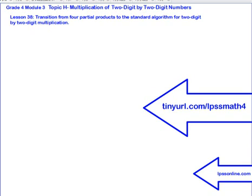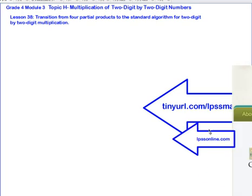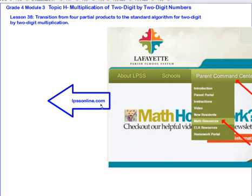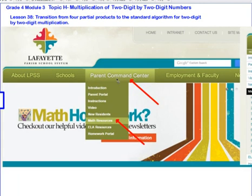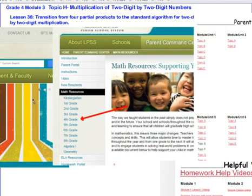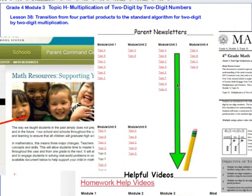Alright, that's going to take care of Lesson 38. We've been transitioning from 4 partial products to the standard algorithm for 2-digit by 2-digit multiplication. You can get a collection of all of these videos at tinyurl.com slash LPSSMath4. You can also go to LPSSOnline.com, hover over Parent Command Center, scroll down to Math Resources, click on 4th grade, and you can have access to our newsletter.